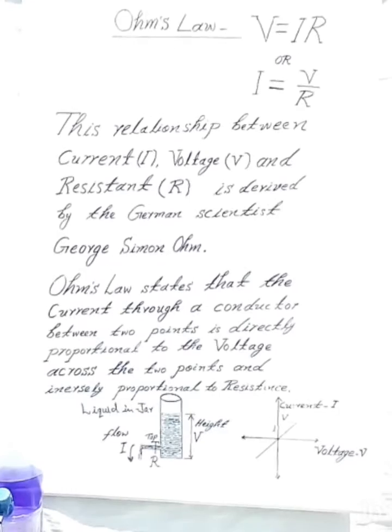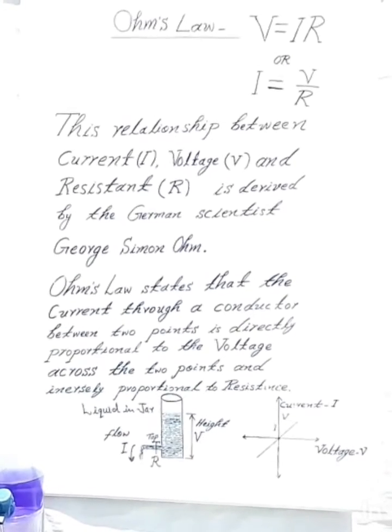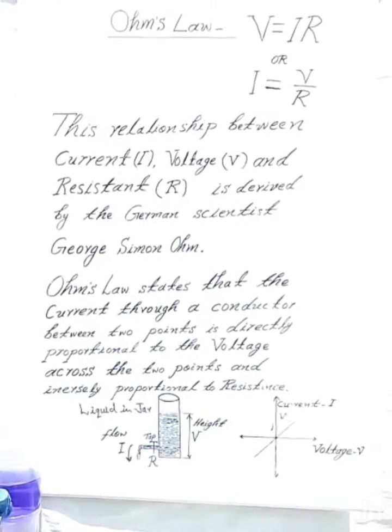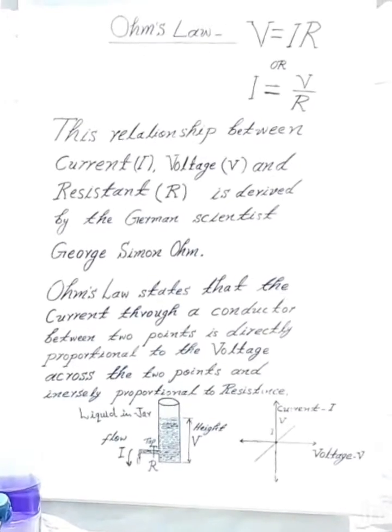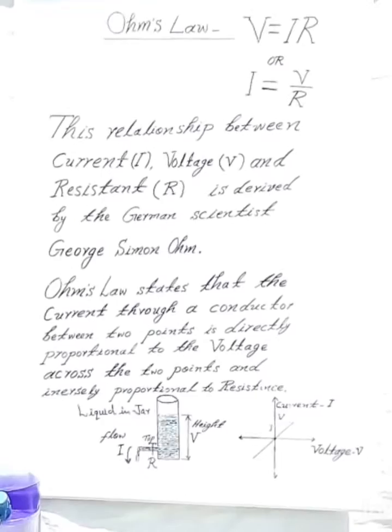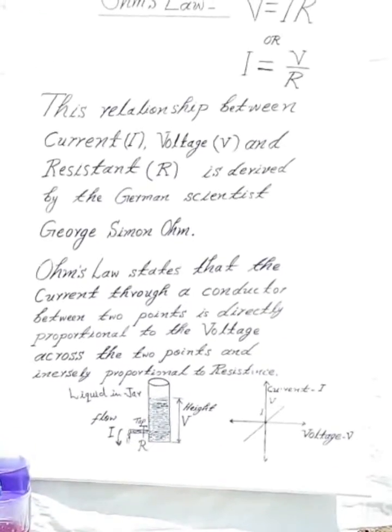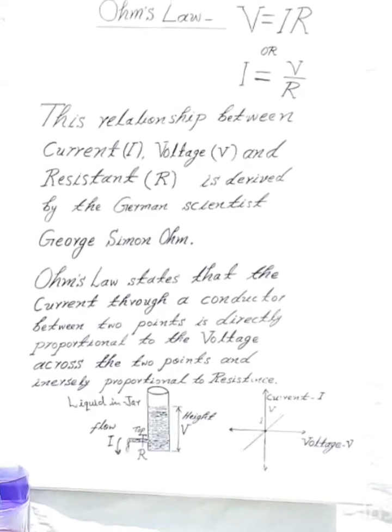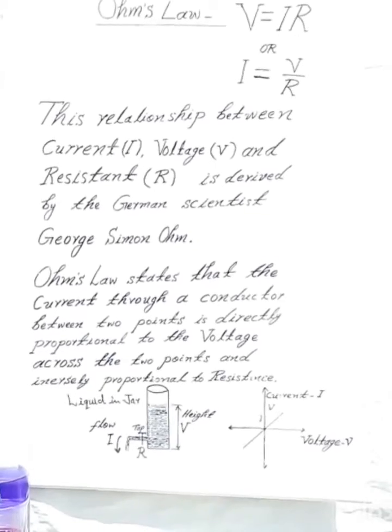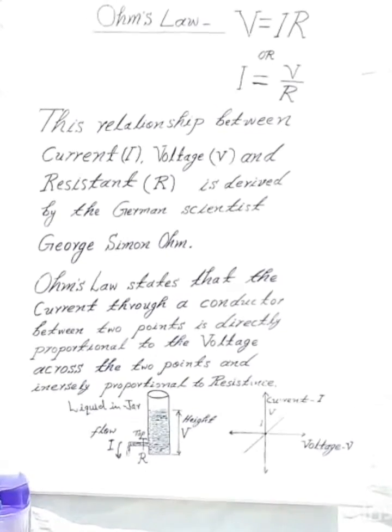Ohm's law states that the current through a conductor between two points is directly proportional to the voltage across the two points and inversely proportional to resistance. In my demo, there is a jar. The water height represents voltage, and water flowing from the tap represents current.